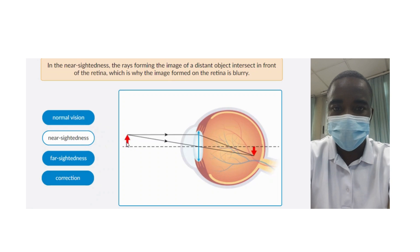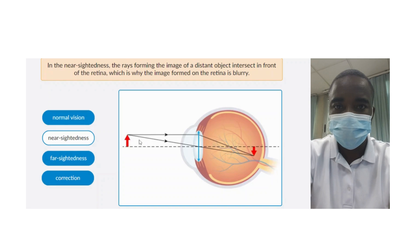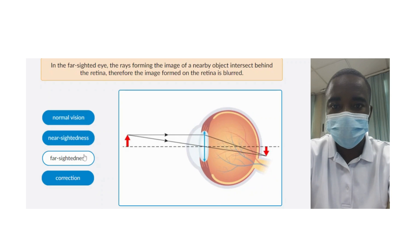The simulation allows students to explore normal vision, where light is properly focused on the retina, resulting in clear and sharp images. By understanding the mechanics of normal vision, students can appreciate the complex interplay of the eye's components in producing clear vision.